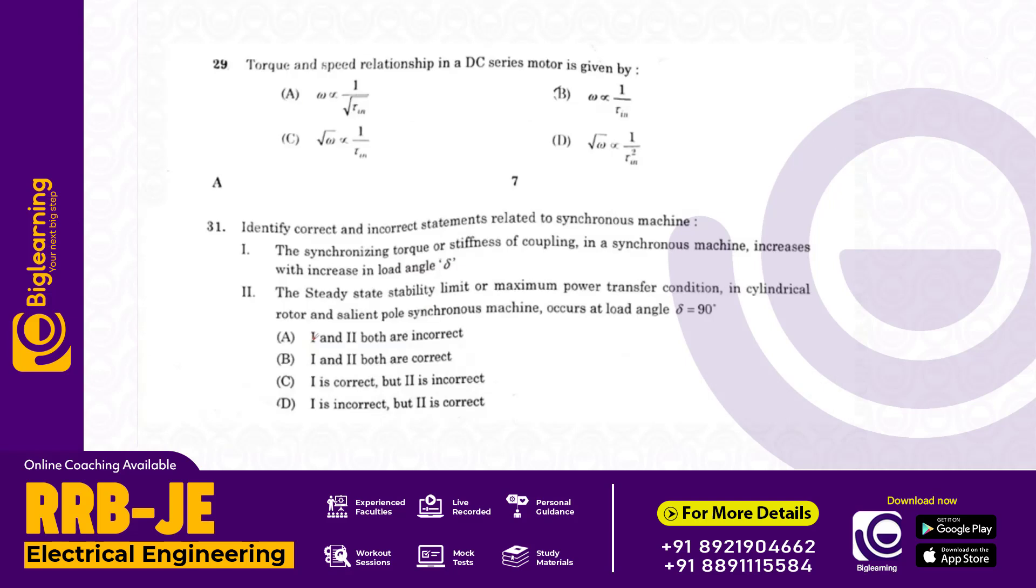Torque and speed relationship in DC series motor: speed is proportional to one by root of torque. For synchronous machines, synchronizing torque increases with load angle delta. Maximum power transfer occurs at delta equals 90 degrees. Answer C: one is correct and two is incorrect.